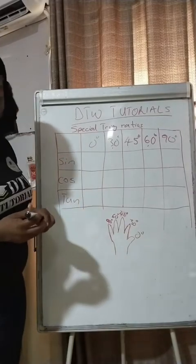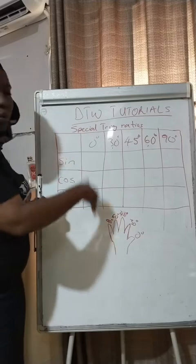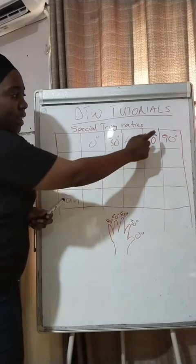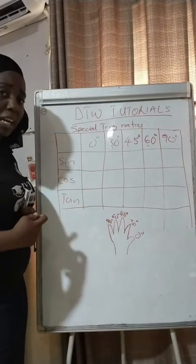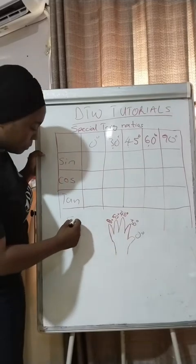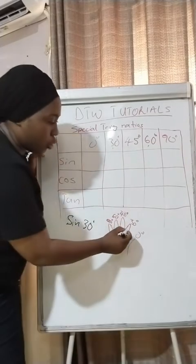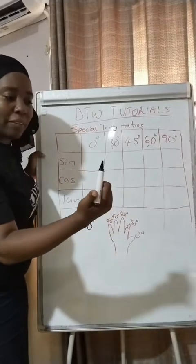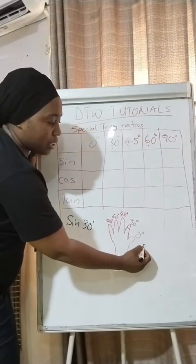Let's focus on 30, 45, and 60 for sine and cosine, then I'll tell you how to solve for tangent. To find sine 30, come to your hand and fold down the finger for 30 degrees. To your right is your sine side, to your left is your cosine side.